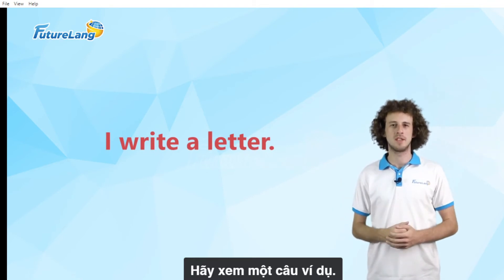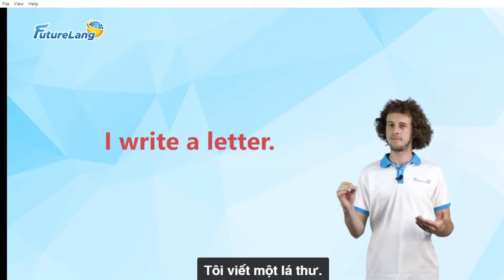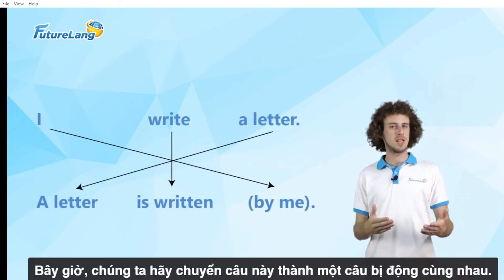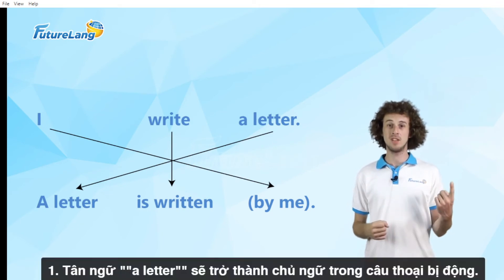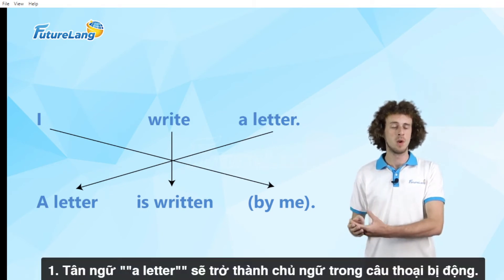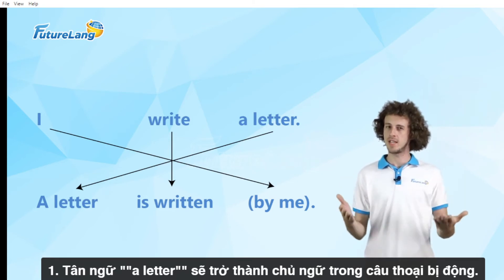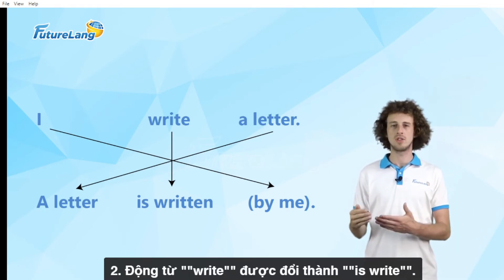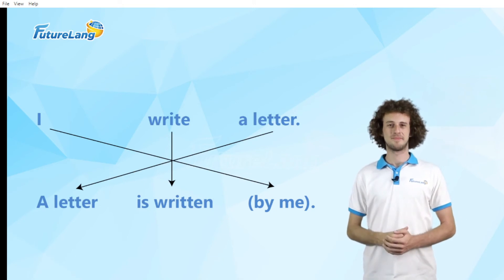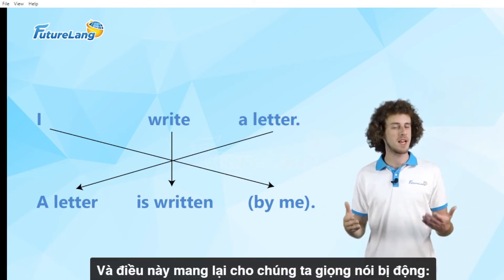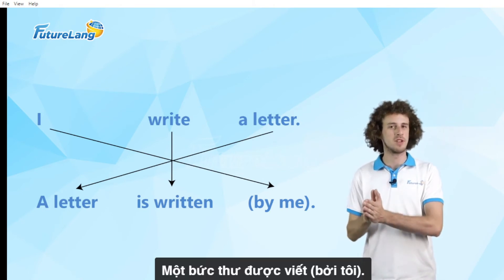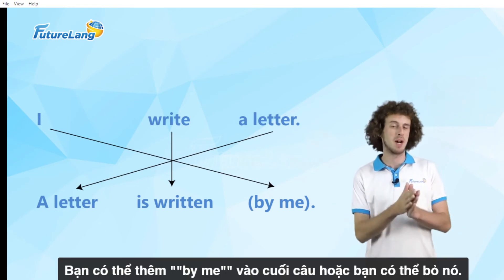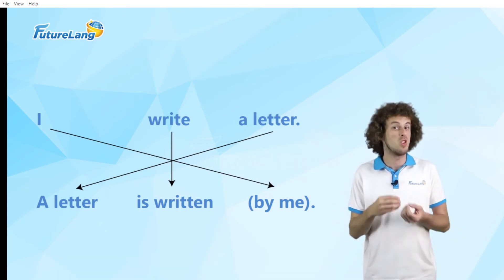Let's look at an example sentence: I write a letter. Now let's convert this into a passive sentence together. First, the object — a letter — will become the subject in the passive voice sentence. And two, the verb write is changed to is written. And this gives us the passive voice: a letter is written by me. You can add by me at the end of the sentence, or you can drop it.